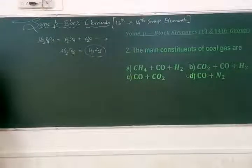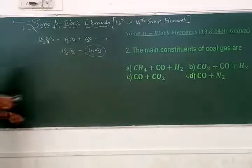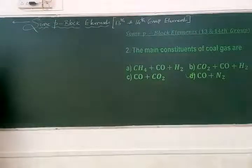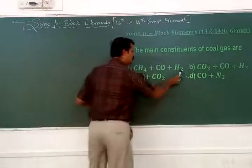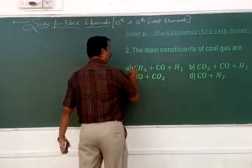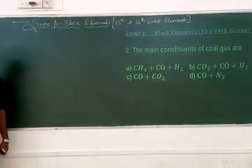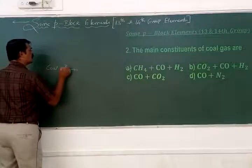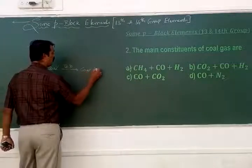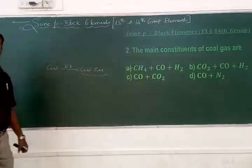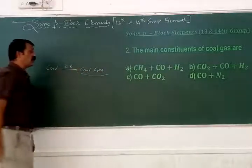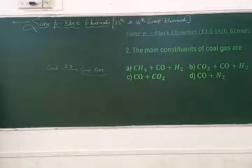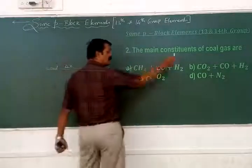The second question concerns the main constituents of coal gas. Coal gas consists of methane, carbon monoxide, and hydrogen. Coal undergoes destructive distillation to yield various components, one of which is coal gas, containing methane, carbon monoxide, and hydrogen.